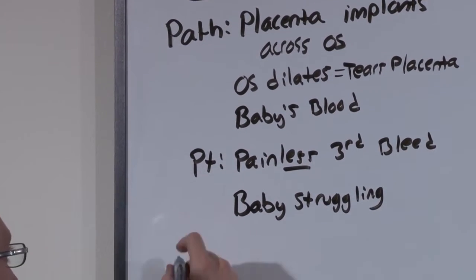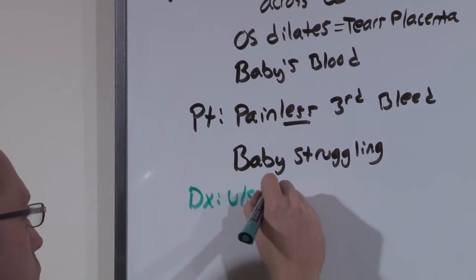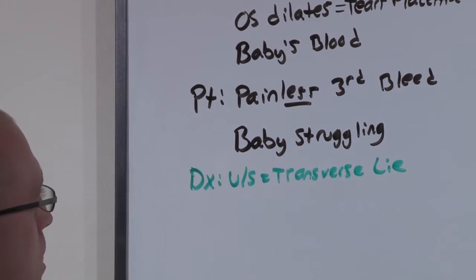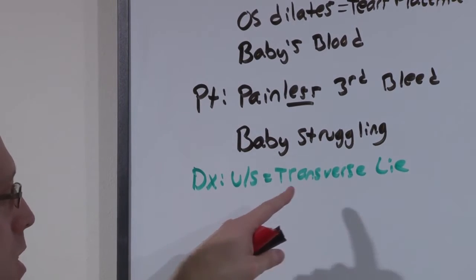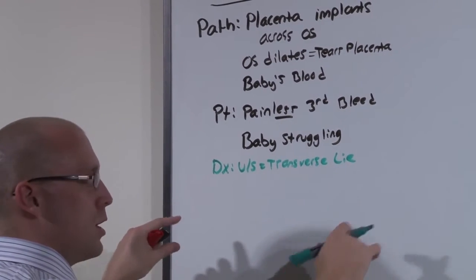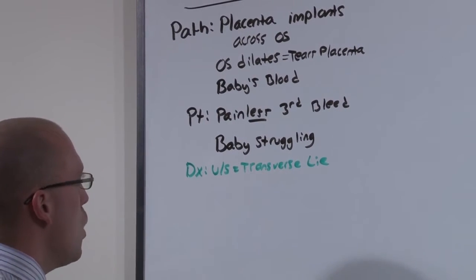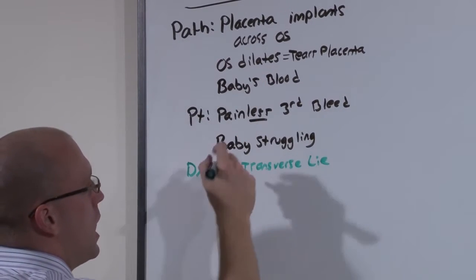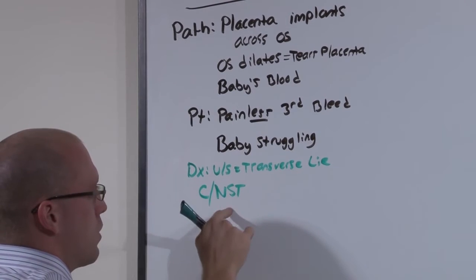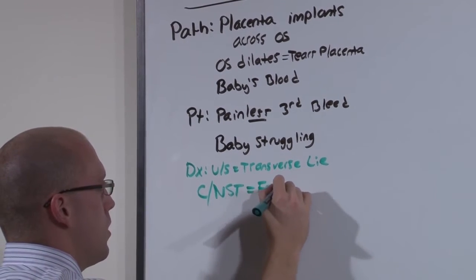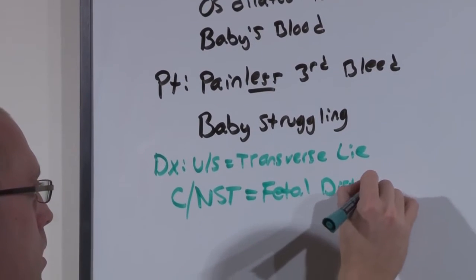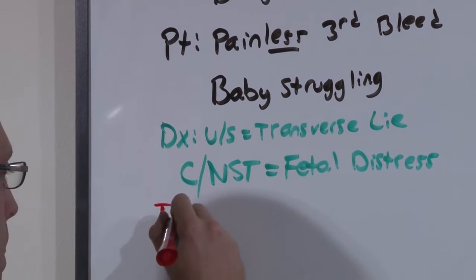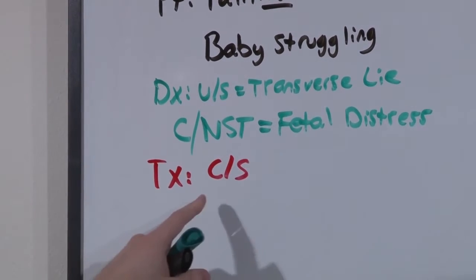You can diagnose this with an ultrasound, which is going to show a transverse lie. You could have anticipated this might have happened based on a previous ultrasound that showed that transverse lie, the idea that the placenta is growing across the os rather than up into the uterus. But as you look at this now, you're going to do a non-stress test. Or because the os is dilating, there are probably already contractions, which would make it a contraction stress test. And what you'll see is fetal distress. And even if you miss the diagnosis entirely, if you see fetal distress, you're going to go to section. Get baby out for fetal distress.